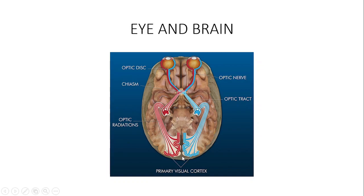The primary visual cortex has macular representation, and it is of such importance that it has dual blood supply — so that in case one shuts down due to trauma or stroke, the other will remain viable for the macula. These are the posterior cerebral artery and the middle cerebral artery. If one shuts down, the other ensures that the macular representation around the occipital lobe where the primary visual cortex is found remains always viable.